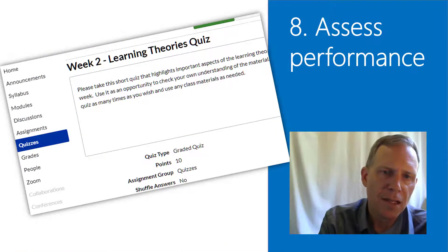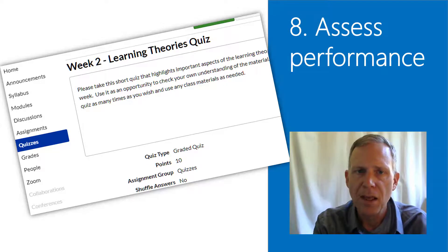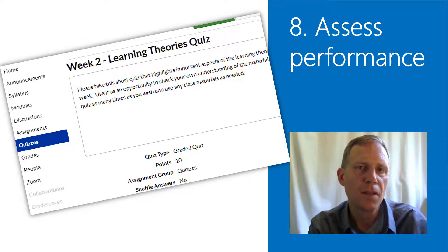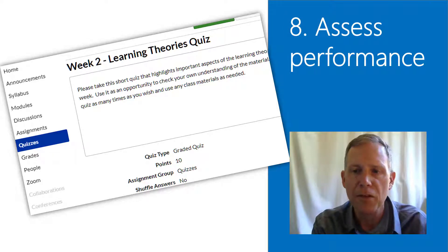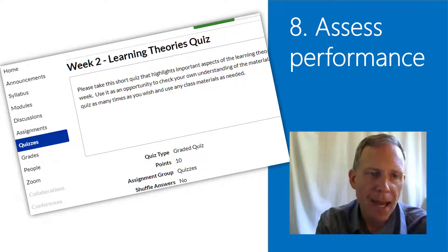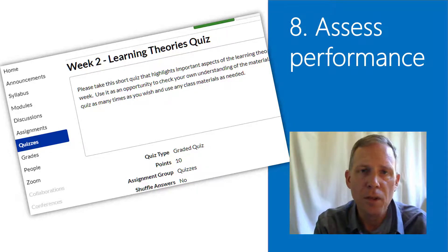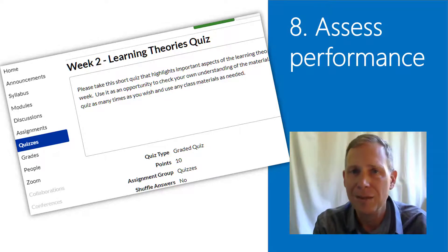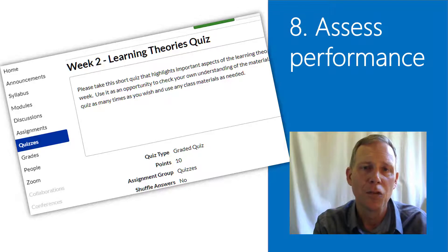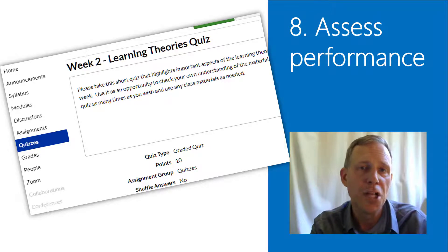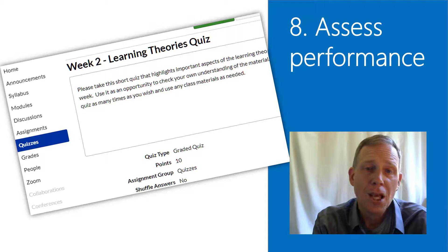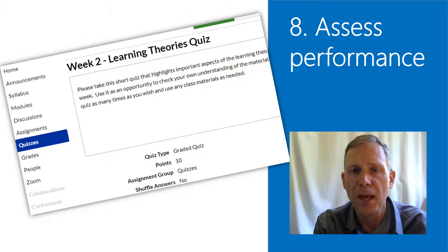The eighth event: assess performance. This is a little different than feedback — this is about what students actually learned and whether the learning outcomes are being met. This might be something automatic, like a quiz built into the course, or an assignment or discussion post. Feedback comes into play, but it might also be a matter of follow-up — maybe individually with the student, or with the whole class. If you do a quiz and nobody is getting it, that's a sure sign something is wrong, and you need this assessment part to know whether students have met the objectives.